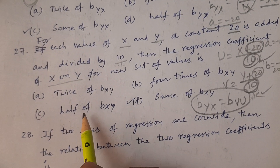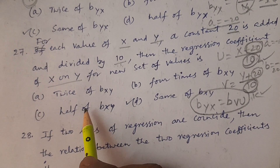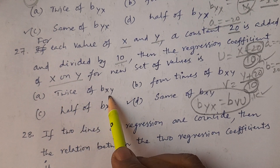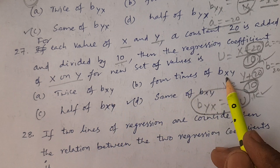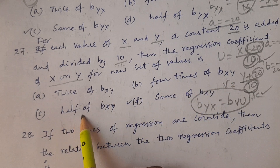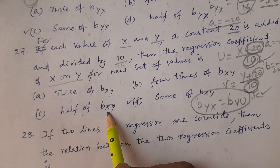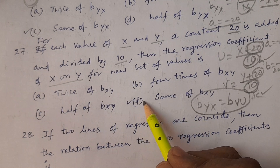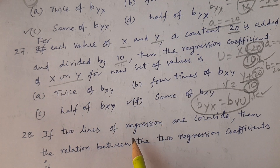Now you see the options. A — twice of bxy, no. B — four times of bxy, no. C — half of bxy, no. D — same of bxy, yes. This is the correct answer, option D.